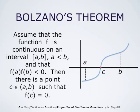Bolzano's theorem states that if a function f is continuous on an interval from a to b with a less than b, and if f(a) times f(b) is negative (meaning the values at the endpoints have different signs), then there is a point c between a and b such that f(c) equals zero. This seems intuitively clear: a function going from negative to positive must cross the x-axis, and that crossing point is c.